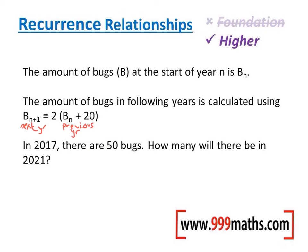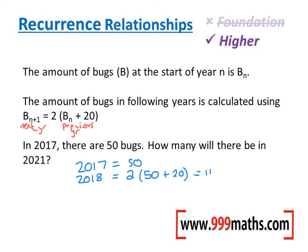In 2017 there are 50 bugs. I'm going to start by writing that out. In 2018, that will be the next year — I'm just going to put 50 into the formula. So the next year is 2 lots of the previous year add 20. 50 add 20 is 70, doubled makes 140.